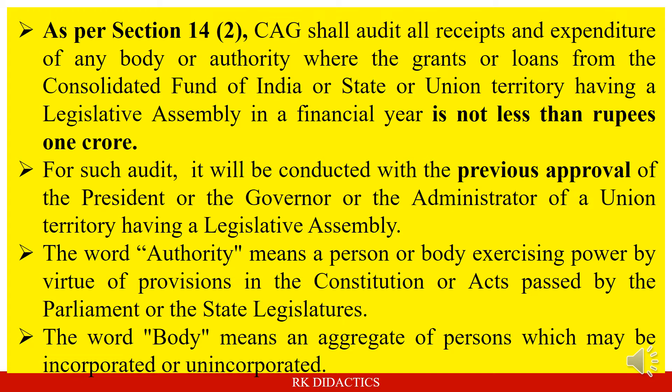As per Section 14(2), CAG shall audit all receipts and expenditure of any body or authority where the grants or loans from the Consolidated Fund of India, or state, or union territory having a legislative assembly, in a financial year, is not less than Rs. 1 crore. So Section 14(1) relates to substantially financed bodies, and Section 14(2) relates to those bodies and authorities receiving grants or loans of not less than Rs. 1 crore. However, this audit will be conducted with the previous approval of the President, or the Governor, or the Administrator of the union territory having a legislative assembly.